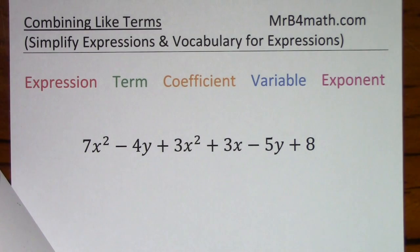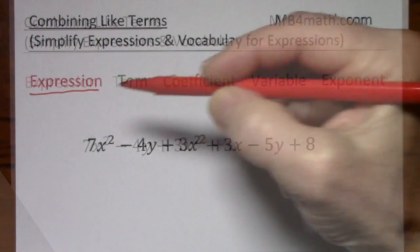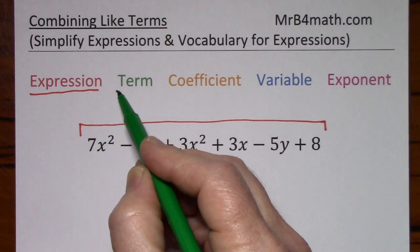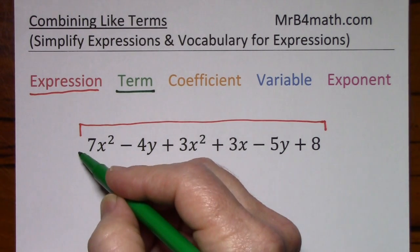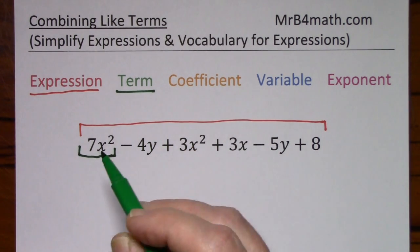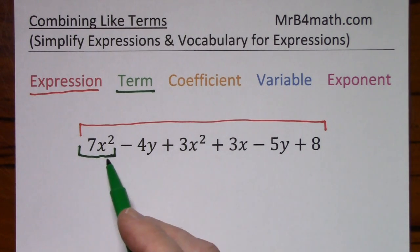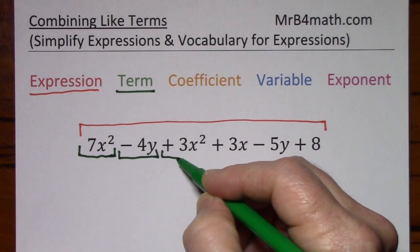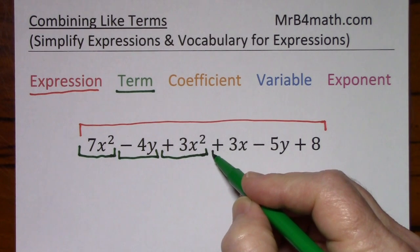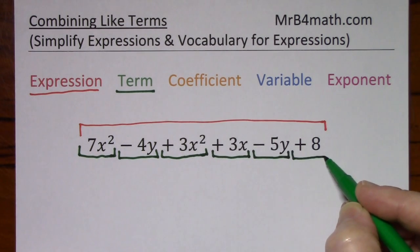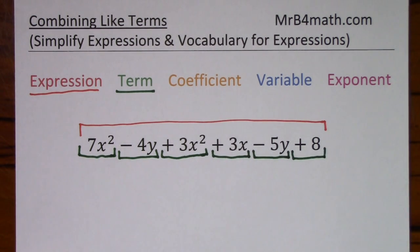You can simplify it by combining like terms. I'll put a red bracket over the entire expression and a green bracket underneath each term. Now a term consists of the sign in front of the number, the number, the variable, and the exponent. So this is a positive 7x squared, negative 4y, positive 3x squared, positive 3x, negative 5y, and positive 8. So the entire expression consists of 6 terms.